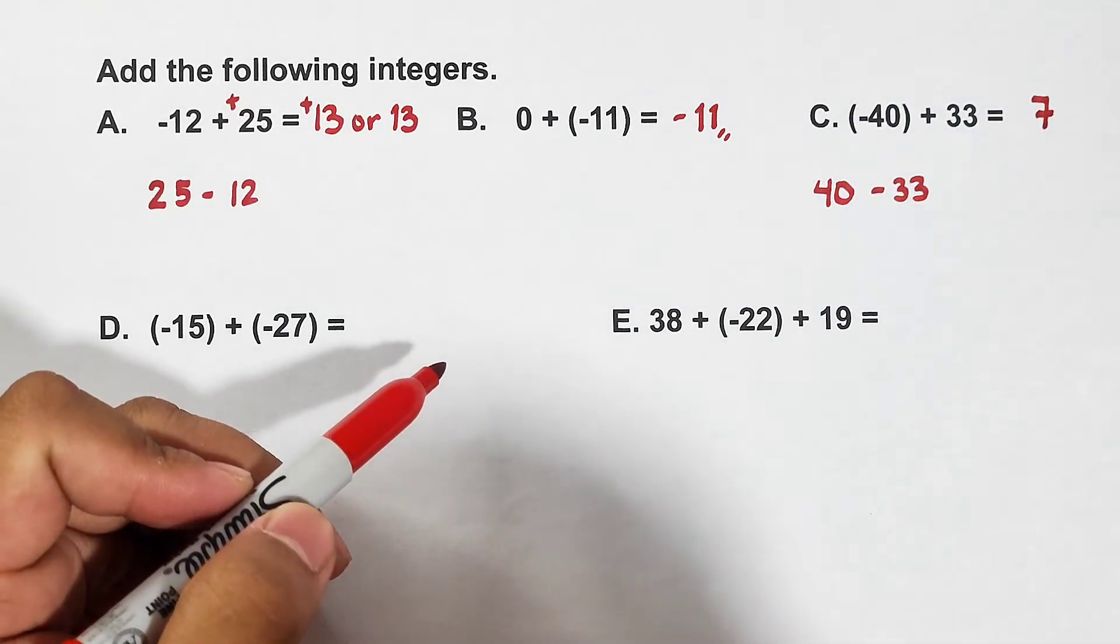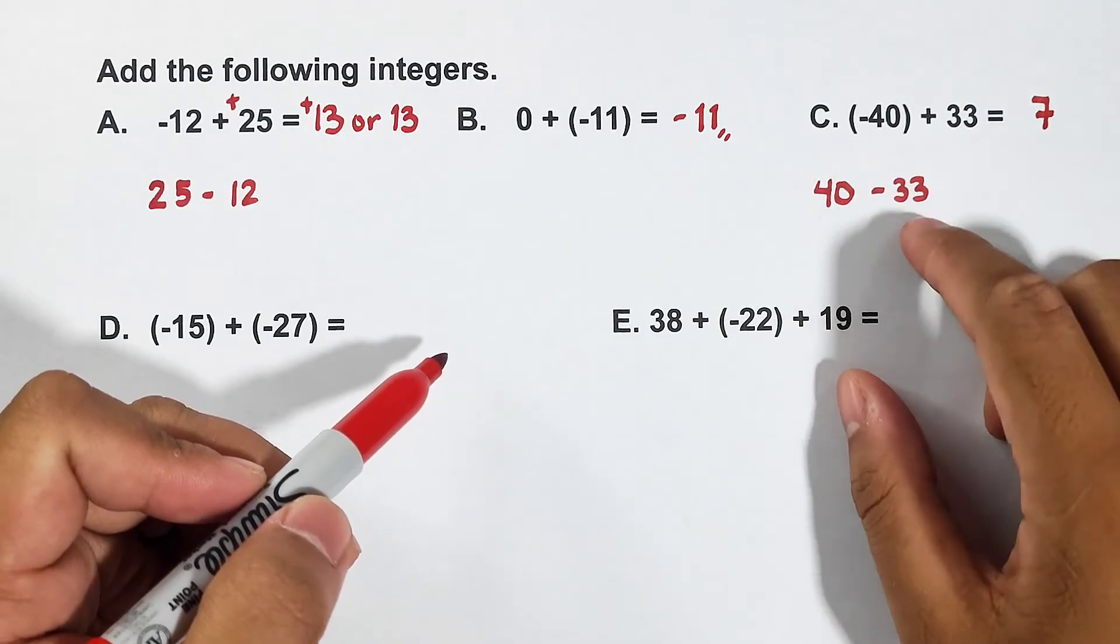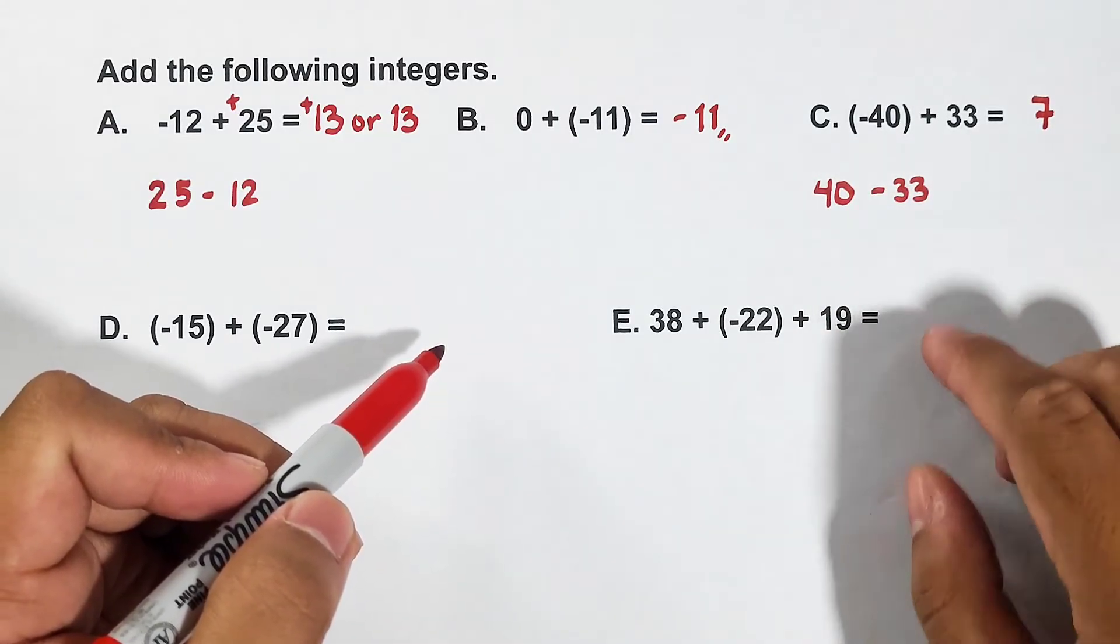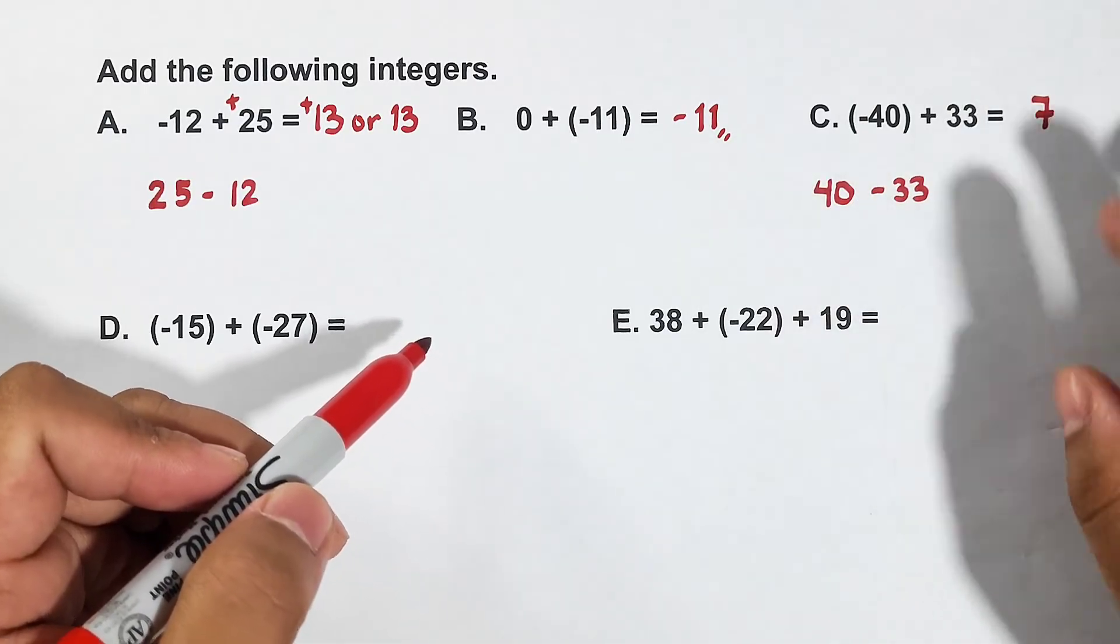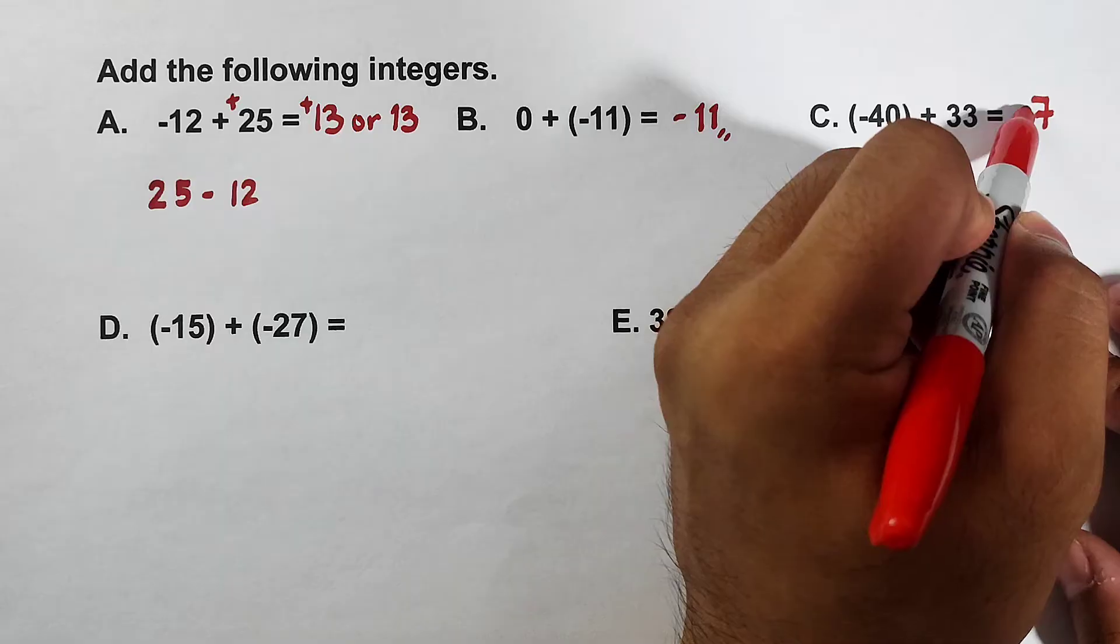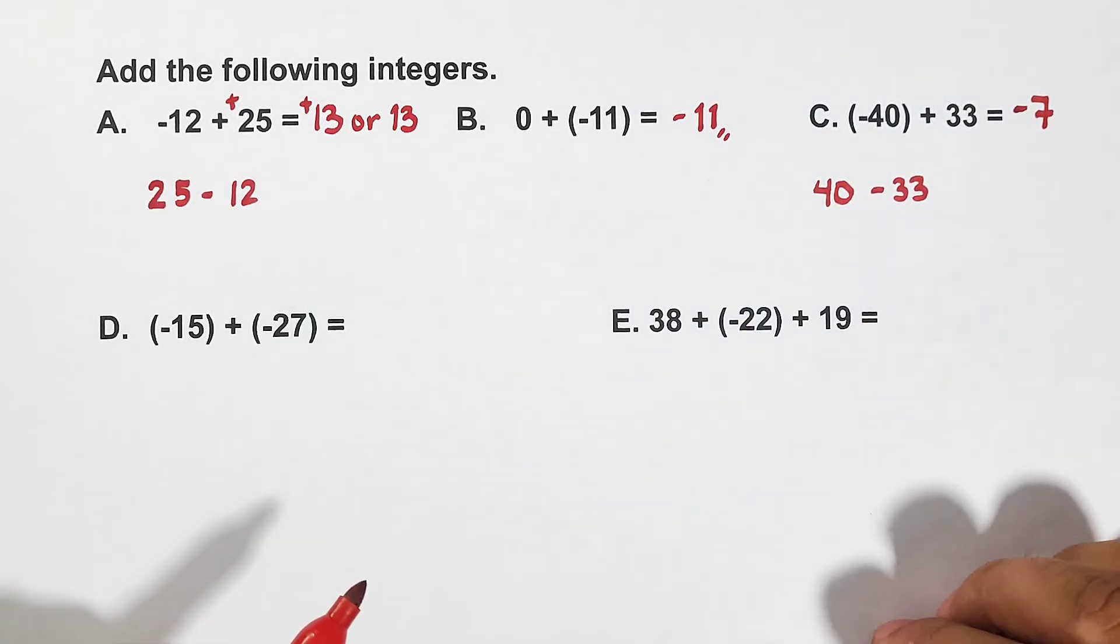Now for the sign, which one has the greater absolute value? This one has the greater absolute value, which is negative. Therefore we will copy the negative sign, and the answer is negative 7.